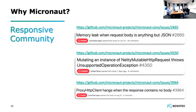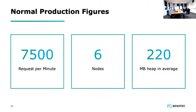Now let's see some production figures. These are our normal production figures: we have a normal load of 7,500 requests per minute, we have six nodes on our cluster, and each instance uses 220 megabytes on average. The reason we have six nodes is that the customer configured the cluster that way — it wasn't our choice. I'm convinced we could have gotten by with three nodes, but we have six, so we deploy six instances rather than leaving three idle.